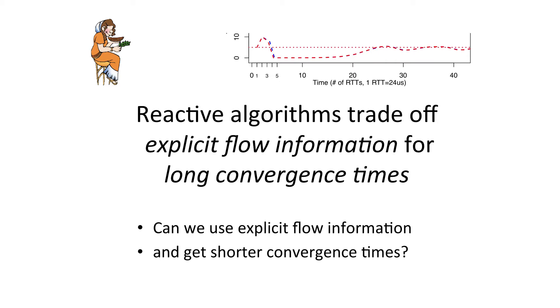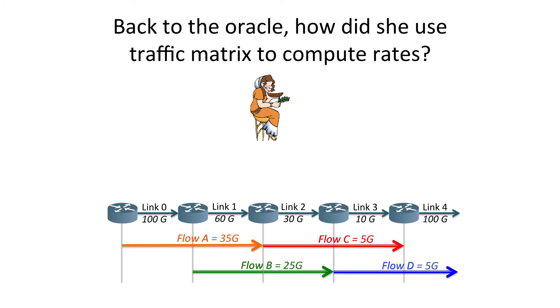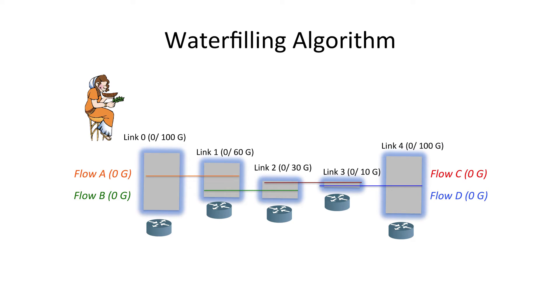What we realized is that perhaps these reactive algorithms are trading off knowledge of explicit flow information for long convergence times. In this talk, I want to explore how we can use this explicit flow information and get shorter convergence times. Let's go back to the oracle and see how she used the traffic matrix to compute rates.